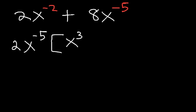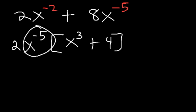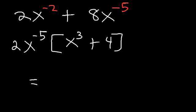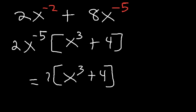For the last term, we took out x to the negative 5 and divide 8 by 2 to get 4. So the factored form is 2x to the negative 5 times x cubed plus 4. If you want to move the variable to the bottom to make the exponent positive, this expression equals x cubed plus 4, multiplied by 2 divided by x to the fifth power.